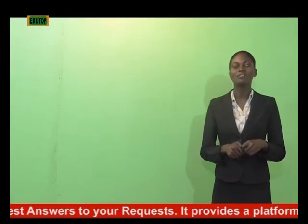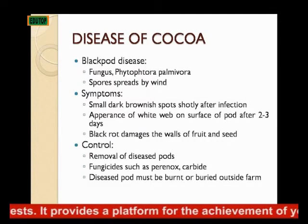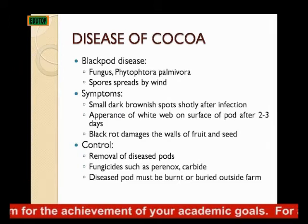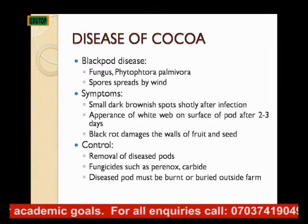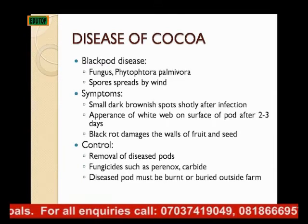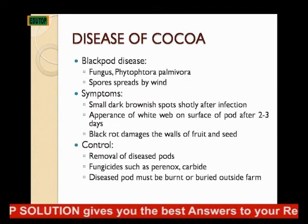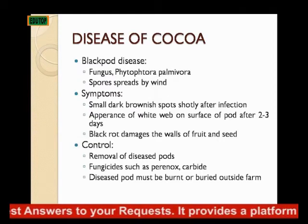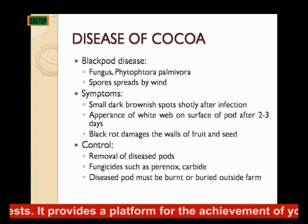The disease of cocoa is black pod disease. It is caused by a fungus called Phytophthora palmivora, and it produces spots that are spread by wind — a very terrible way of spreading disease since wind always blows. The symptoms include small dark brownish spots shortly after infection, then the appearance of a white web on the surface of the pod after two to three days, followed by black rot damage on the walls of the fruit and the seed.